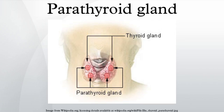The parathyroid glands are small endocrine glands in the neck of humans and other tetrapods that produce parathyroid hormone. Humans usually have four parathyroid glands, variably located on the back of the thyroid gland, although considerable variation exists.